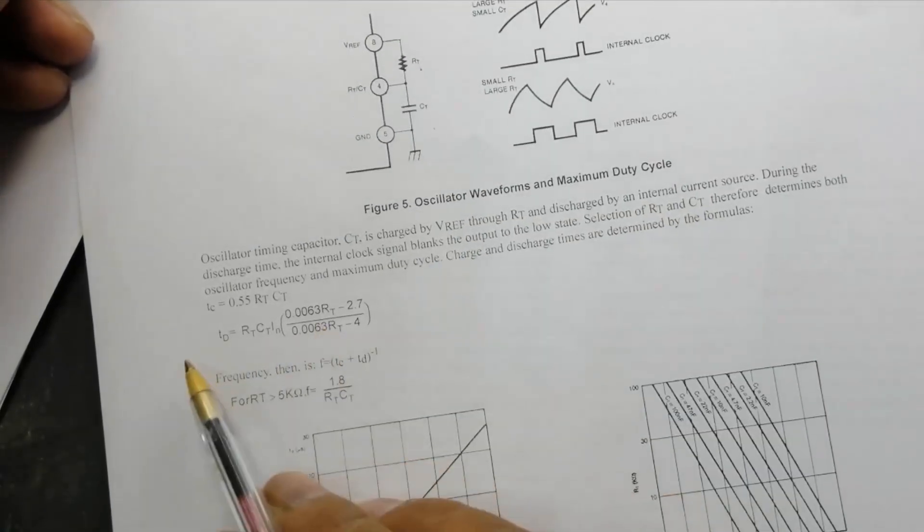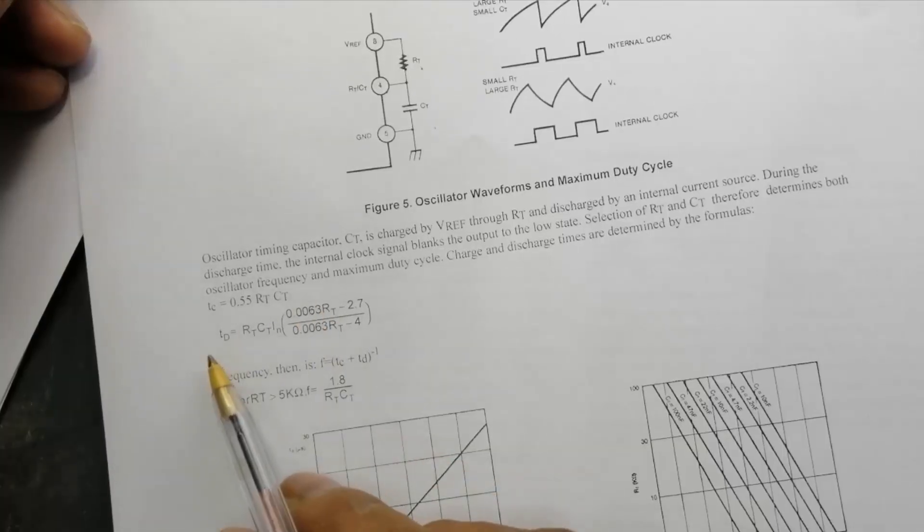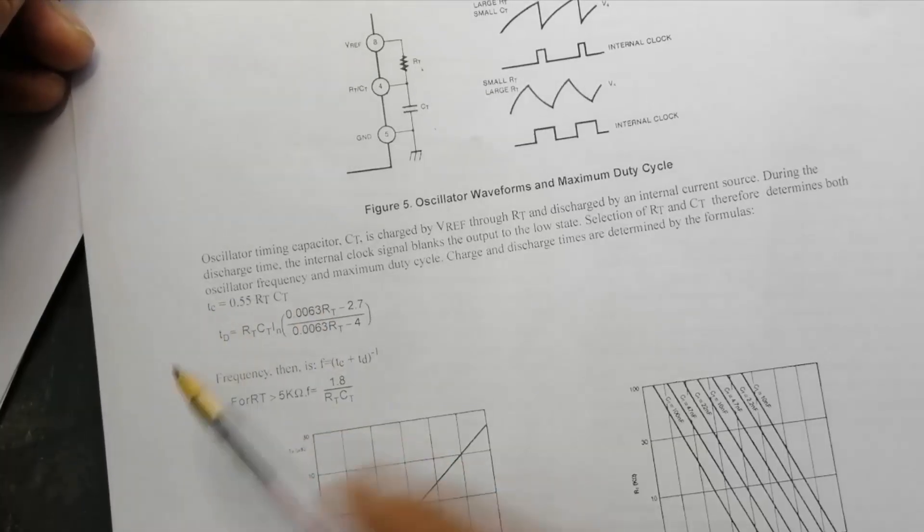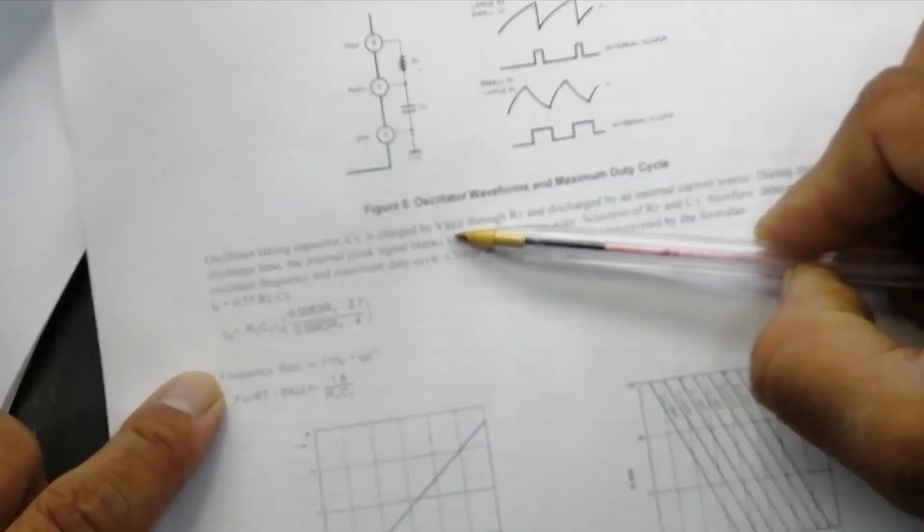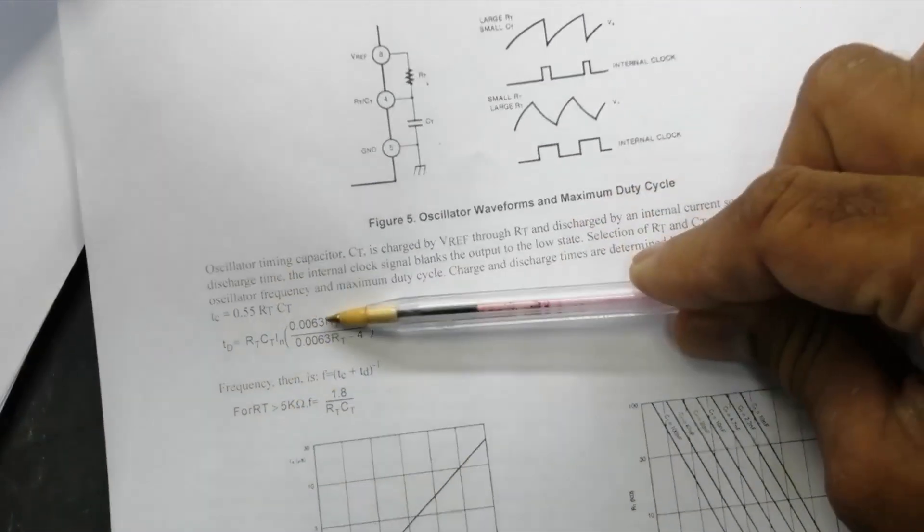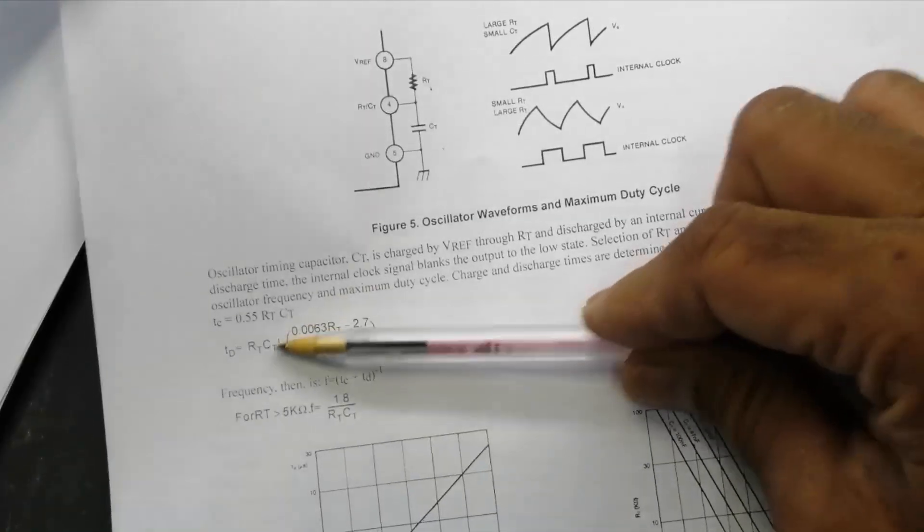What frequency we need, what we need the output duty cycle, it will be adjusted from here. So here is a combination RT, CT and this is formula: T discharge and T charge. We have to select the charging and discharging time. We can put the values and we can select the formula and frequency here.